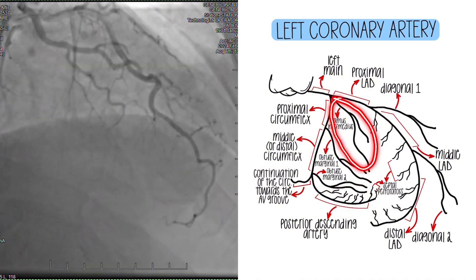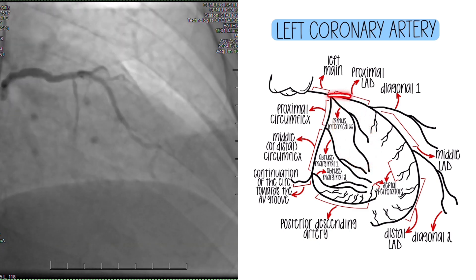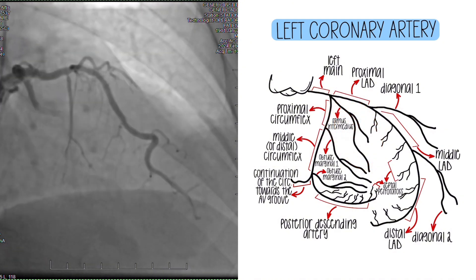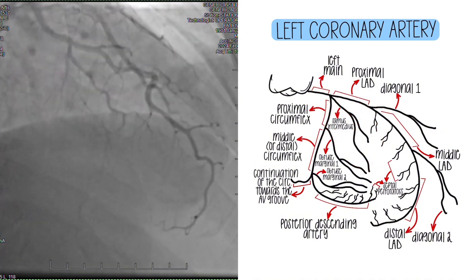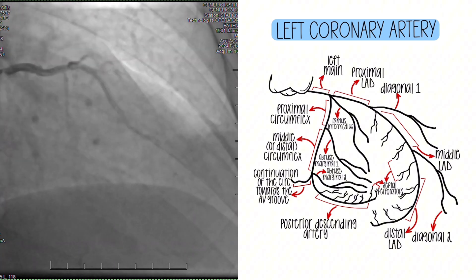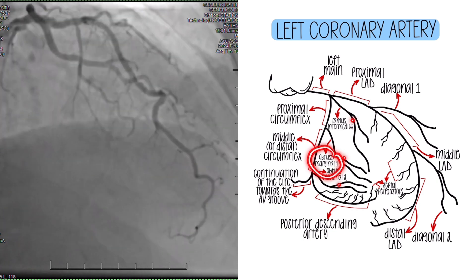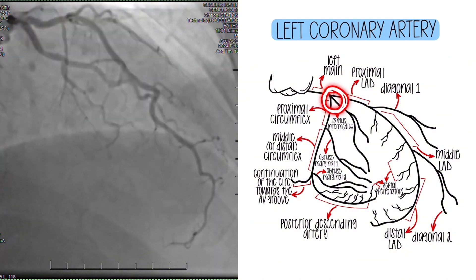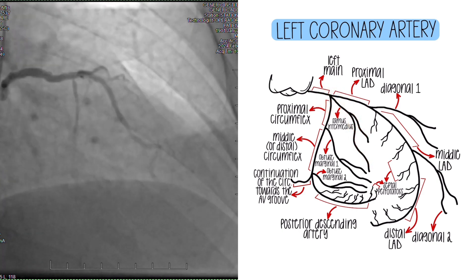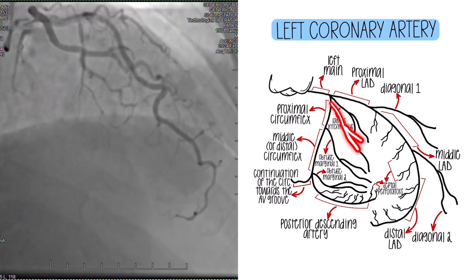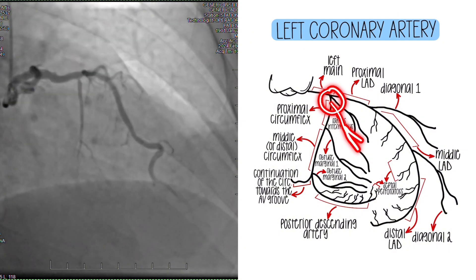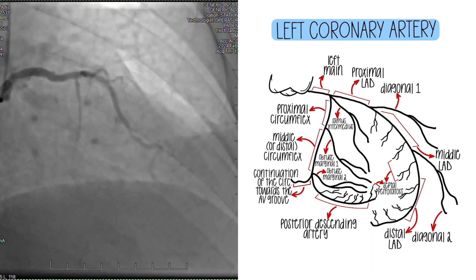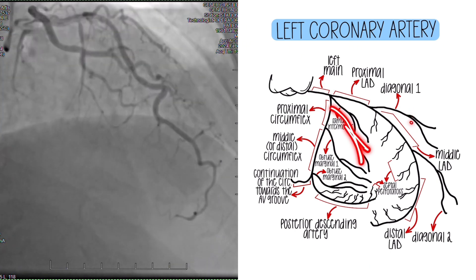Something that not everybody has is a real trifurcation — you have this middle vessel called the ramus intermedius, intermedius meaning middle. It could also be called a high obtuse marginal because it follows the same pattern and looks like the obtuse marginals. There are certain views taken to see if this is a real trifurcation — then you can call it a ramus — but if it came off at a different point, we would call that a high obtuse marginal because it follows the pattern of the rest of those that come off the circ.